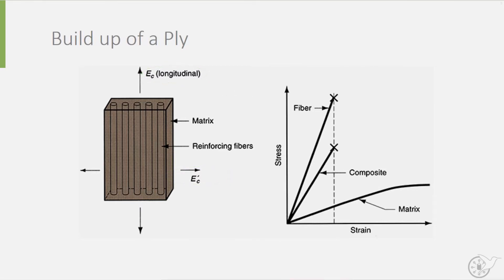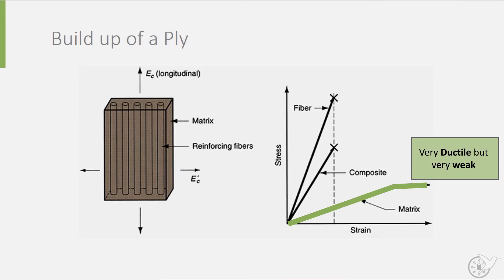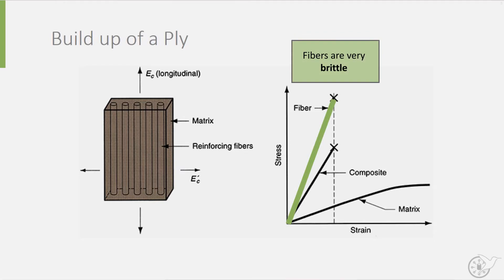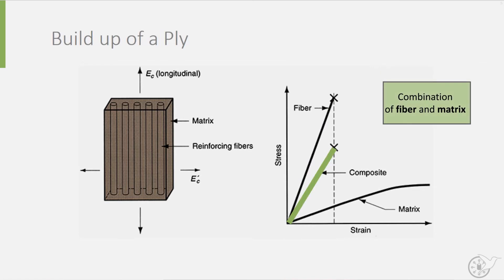If we look at the stress-strain diagram, we can see three lines. The lower one is the curve of the matrix material, which is very ductile but not very strong. The upper curve shows the behavior of the fibers on their own. As you can see, the fibers are very brittle. The middle curve is what you get if you combine the two into a ply. You can see that its characteristics are a function of the two.